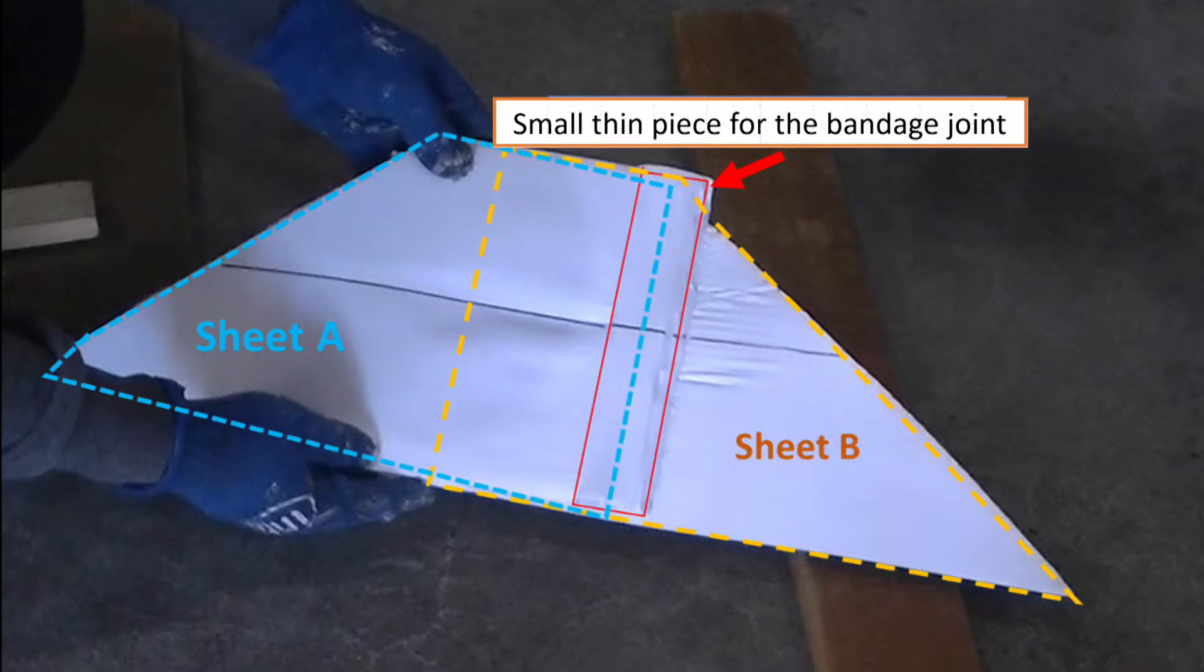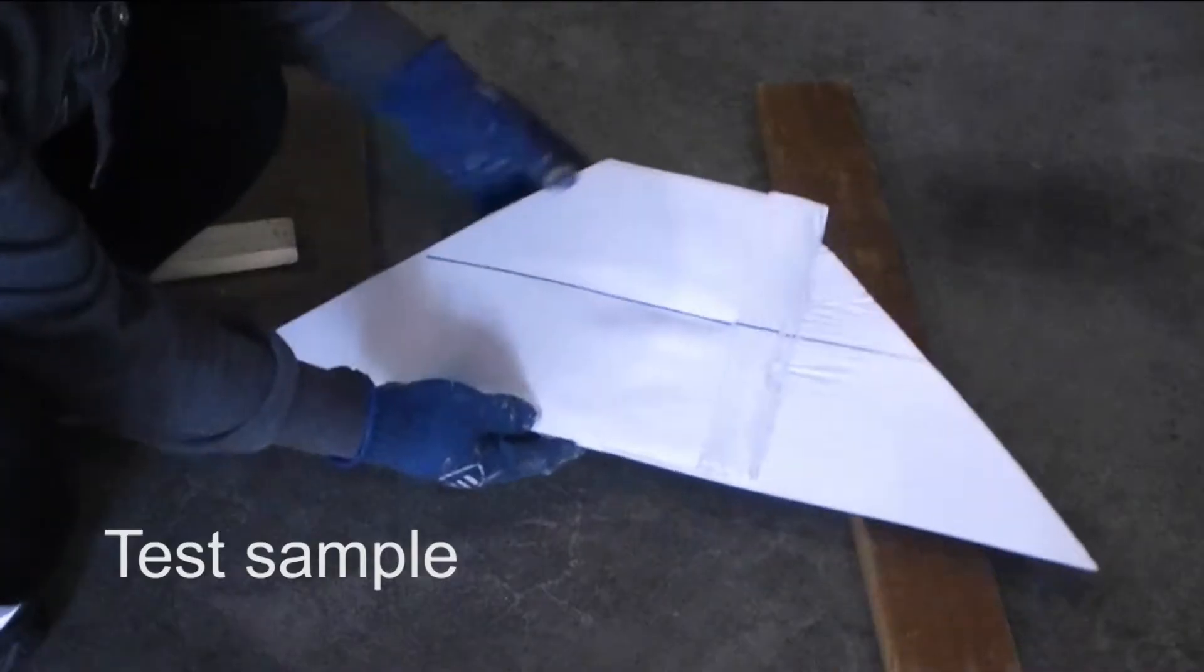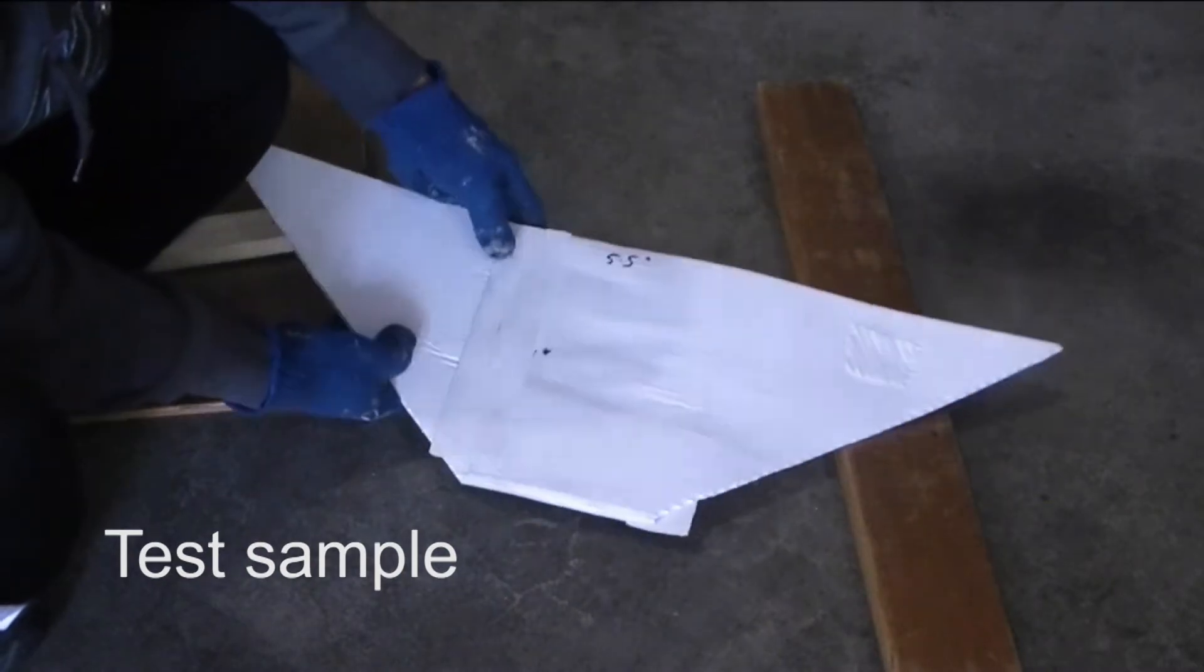I used the sample I made earlier for this experiment. The overlapped area of two corpus sheets is about 5.5 inches in width.